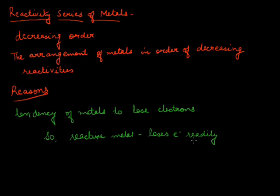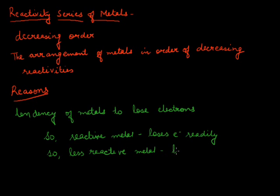On the other hand, if a metal loses electrons less rapidly to form a positive ion, it will react slowly with other substances and such a metal will be less reactive. Thus, a less reactive metal is the one which loses electrons less readily.